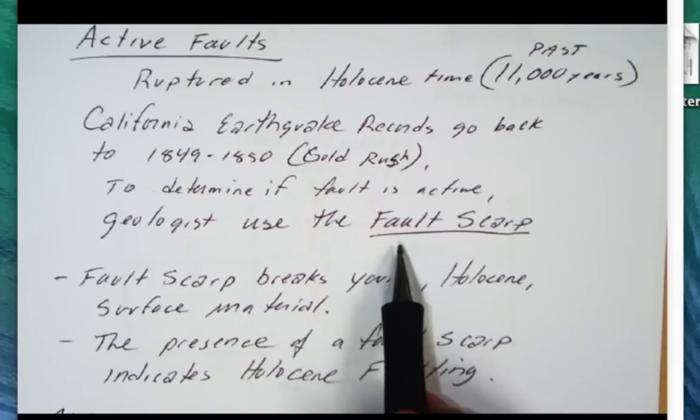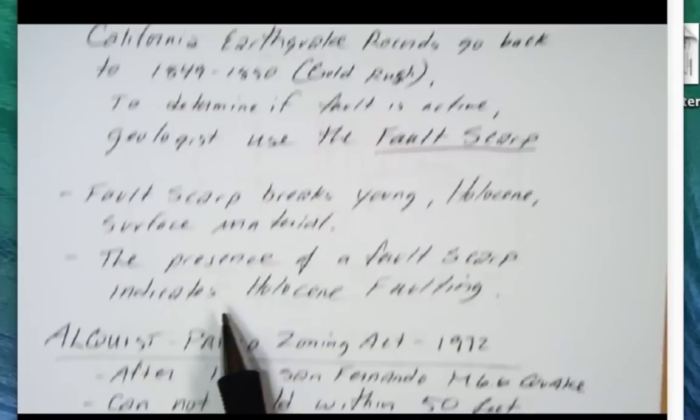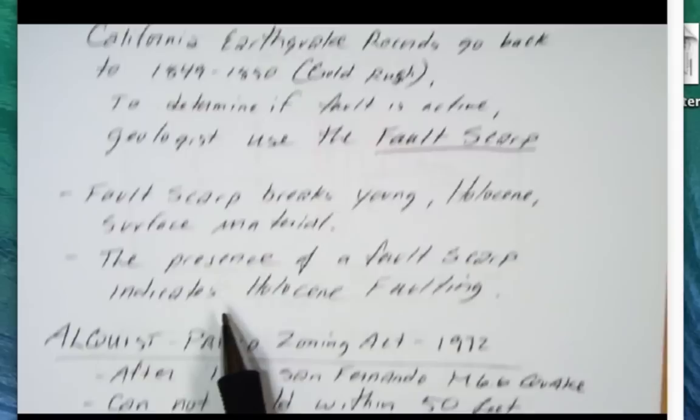geologists have to use something called a fault scarp. The fault scarp is a surface break. That surface break will break young Holocene sediment. Usually that's loose material. If the young rock is offset by the fault, then it's a recent faulting.